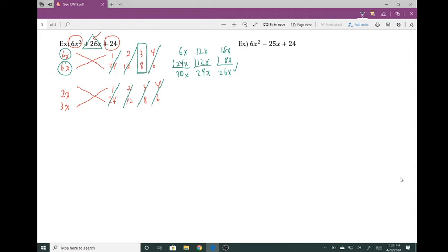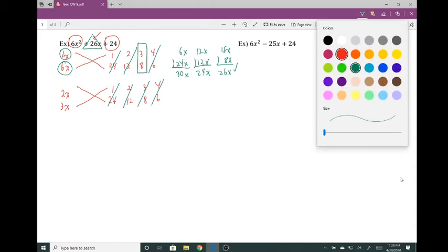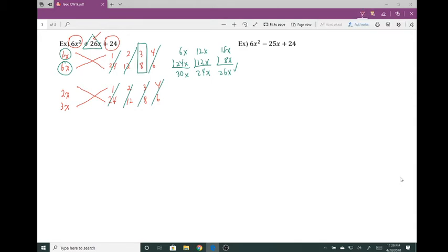So if this works, we don't have to try out any of the other pairs because we found the one that we want to use. Now when we write the answer, this is going to be the last key part of the crisscross method.